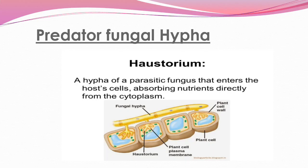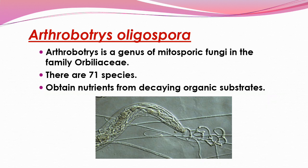You can see here in the diagram a haustorium — a hypha of parasitic fungi that enters the host cell, absorbing nutrients directly from the cytoplasm. It is a type of predator fungi, as shown in the diagram.